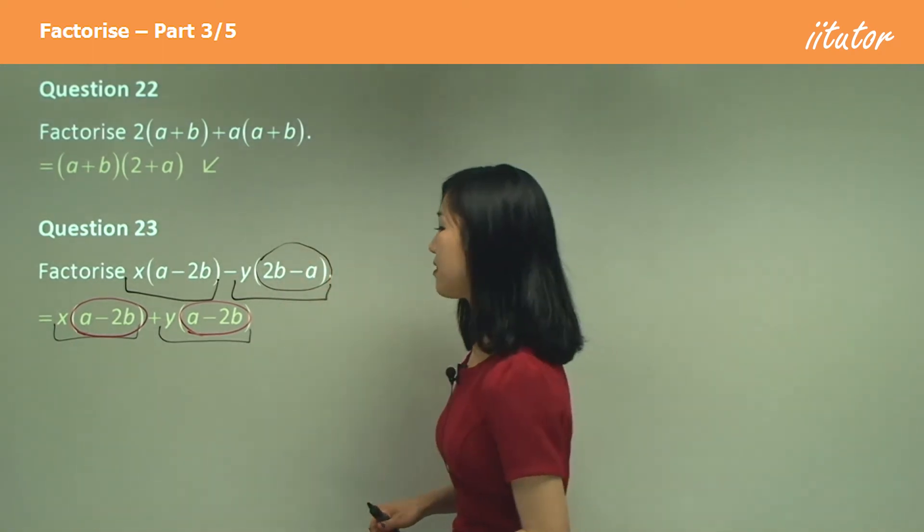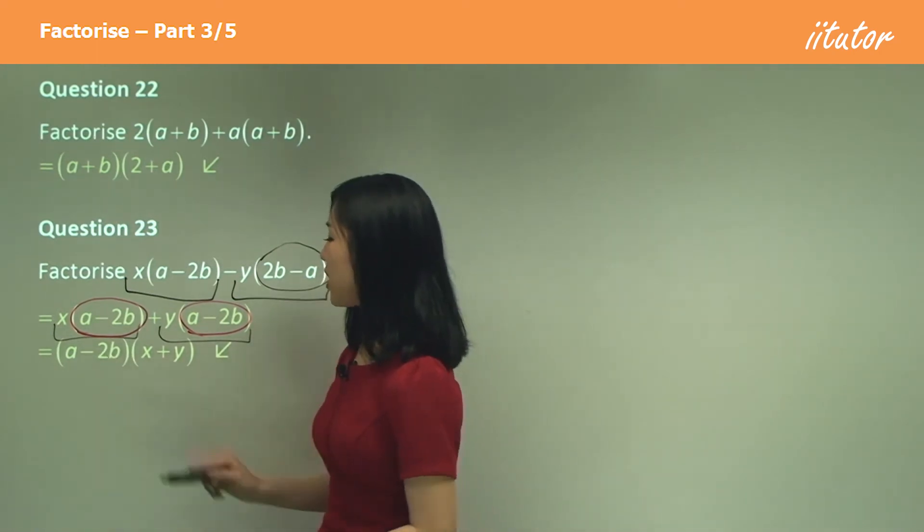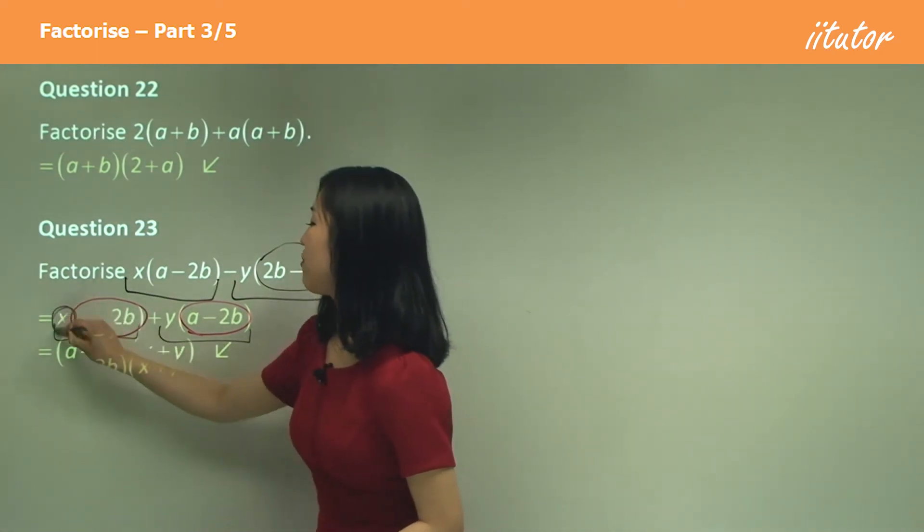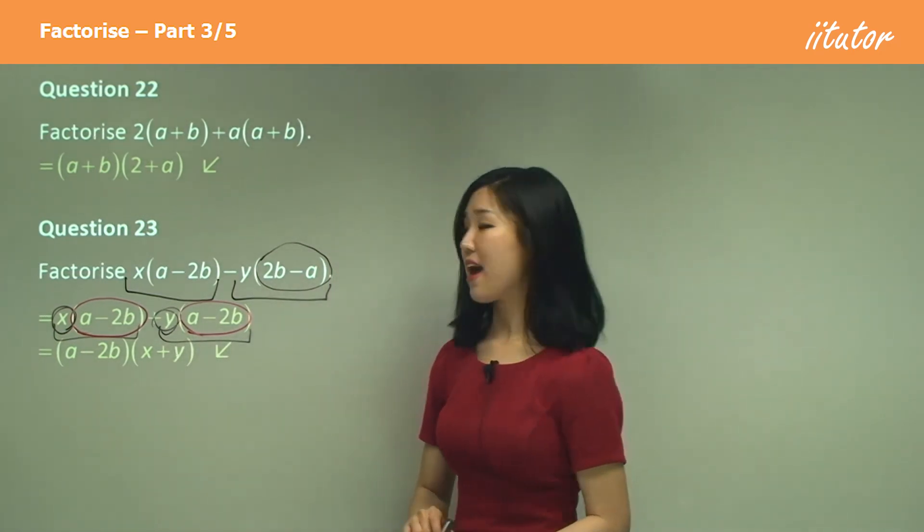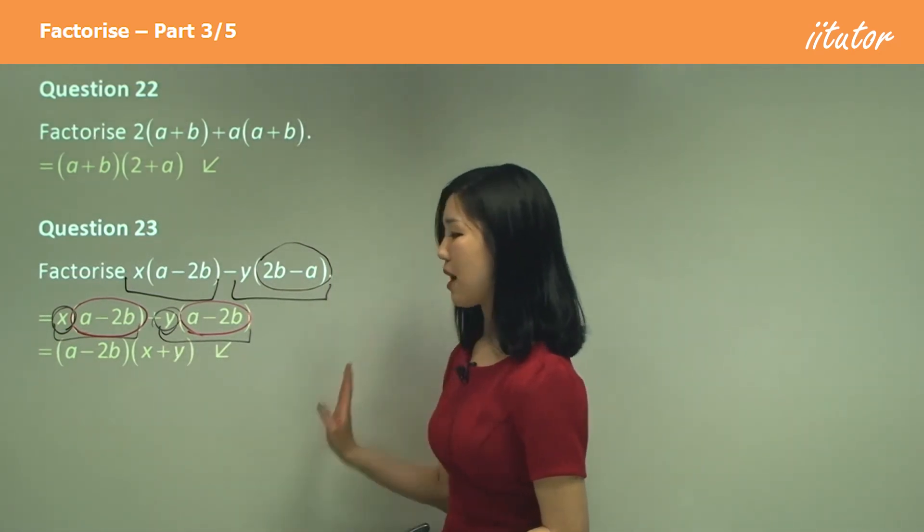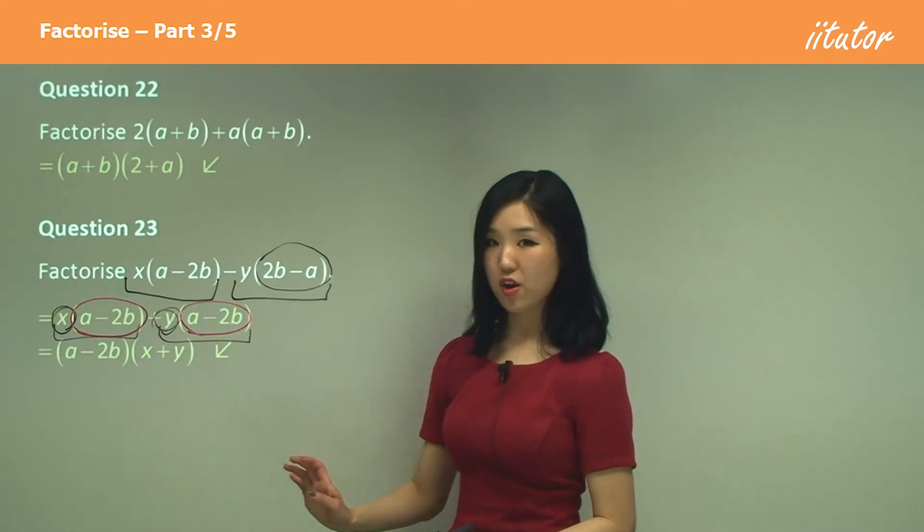Take that a minus 2b outside and we'll now just have x left here and y left here. So it's a minus 2b times x plus y, okay?